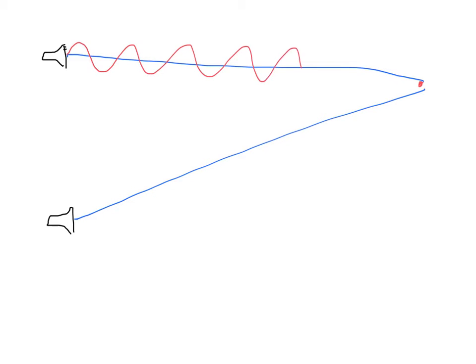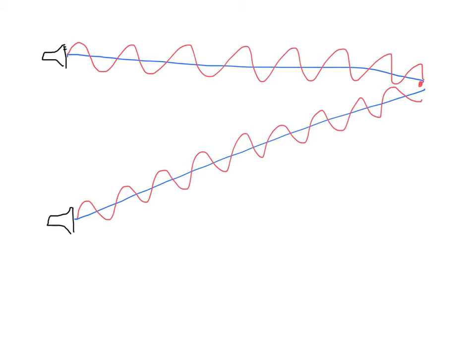Let's also assume both speakers are in phase, which basically means when speaker one begins a sound, it's producing the same wave as speaker two. So the wave from speaker one goes up, down, up, down, etc., and from speaker two, if they're in phase, it also goes up, down, up, down, etc. But it could be the case that when they arrive at your position, they're not in phase with each other.